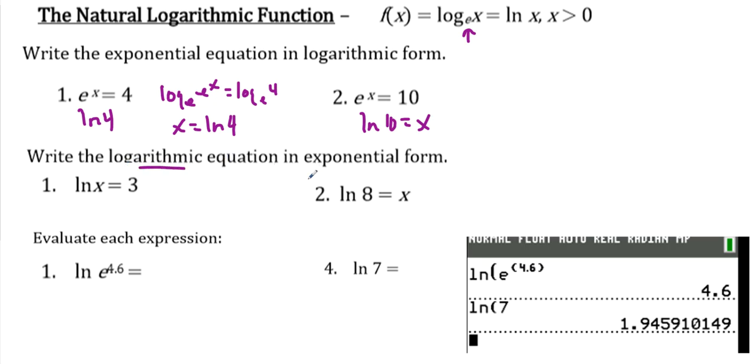Write the logarithmic equation in exponential form. Well, now we're just going backwards. So e is my base, right? E is the base, that's my exponent, so e to the 3 is equal to x. E is my base, so e to the x is equal to 8. And we can play around with a little bit more algebra if we so desired.